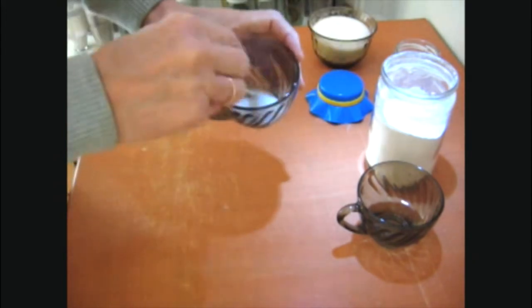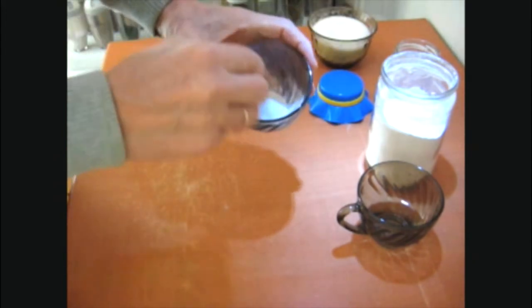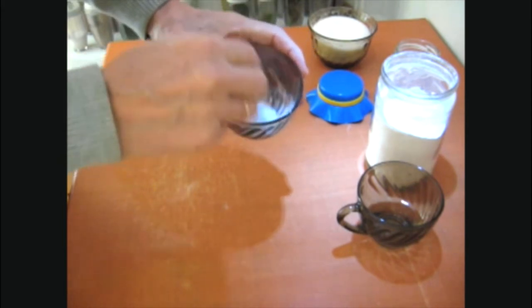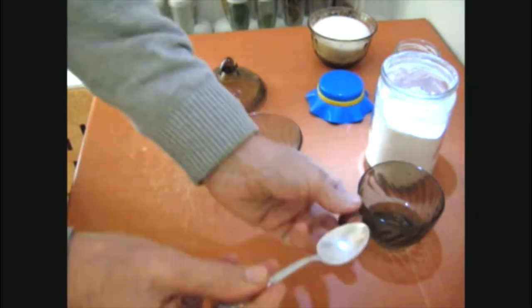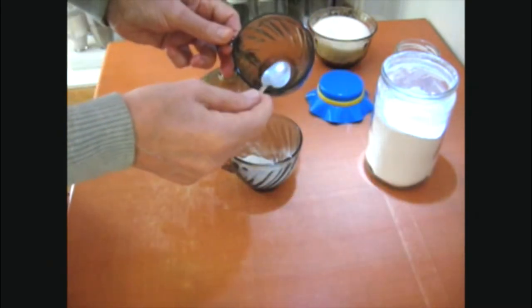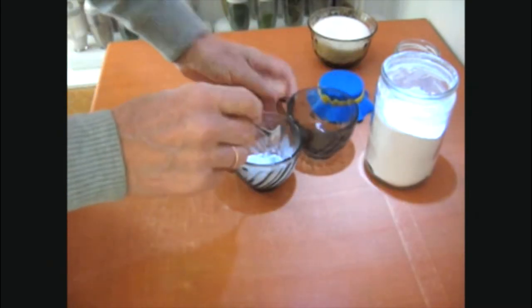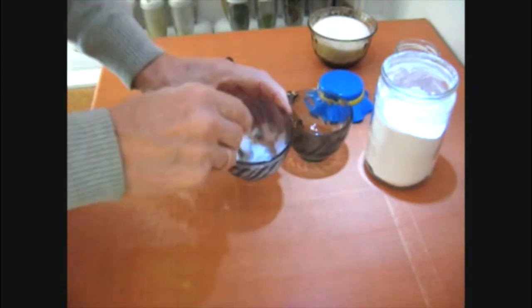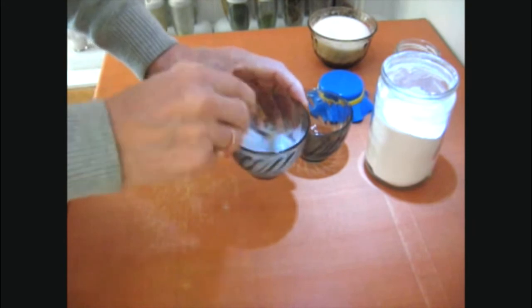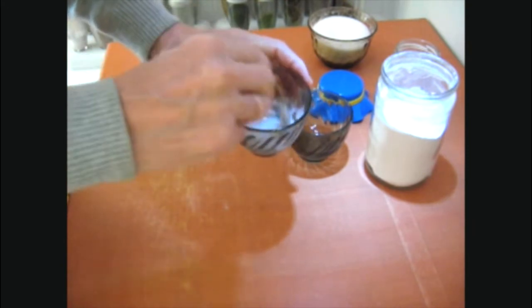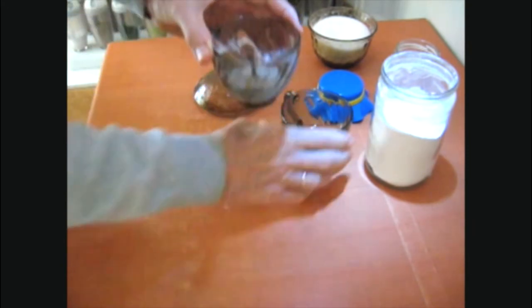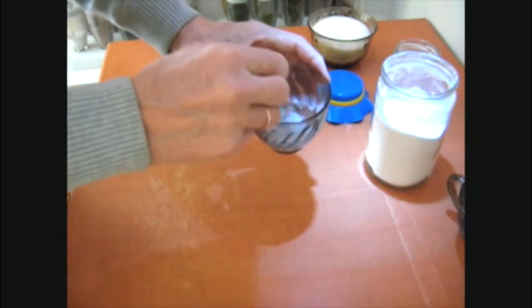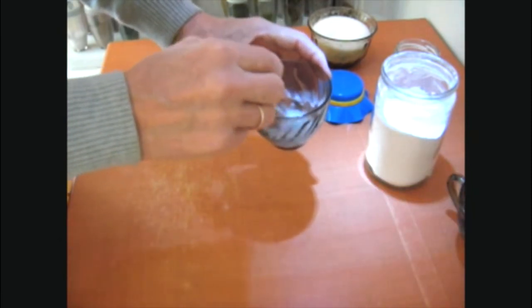We mix all this thoroughly and pour a little water so that the starch just dissolves. Here it turned out two spoons. A minimum of water is enough so that the temperature during the next operation was normal.